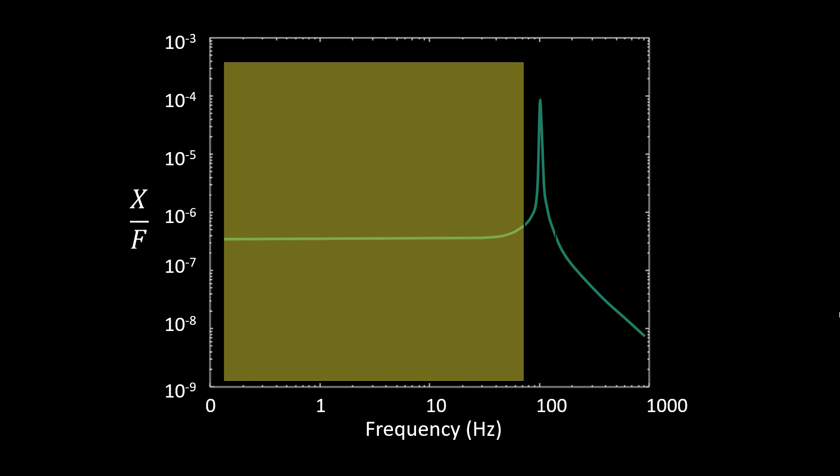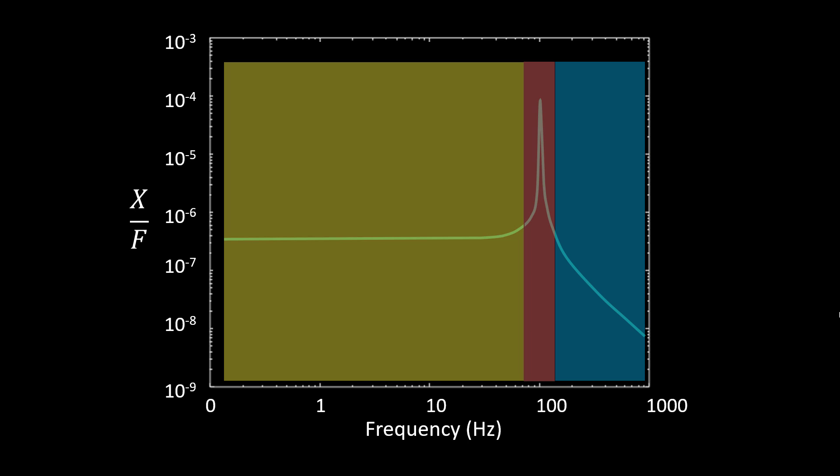FRFs can be divided into three different zones. There is a stiffness-controlled zone, a damping-controlled zone, and a mass-controlled zone. What these zones mean is that these values are dependent on the spring constant, the damping coefficient, and the mass, respectively.